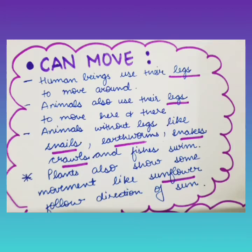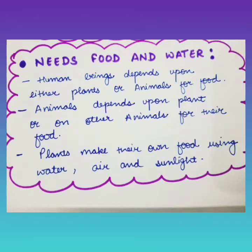Plants also show some movement — for example, sunflowers follow the direction of the sun. The second feature is: living things need food and water. Human beings depend upon either plants or animals for food. Animals depend upon plants or other animals for their food. Plants prepare their own food using water, air, and sunlight.